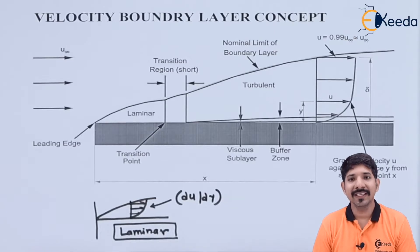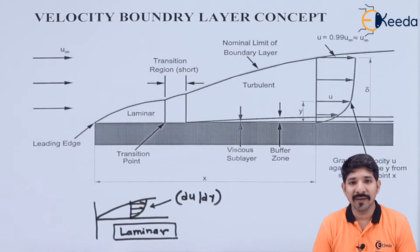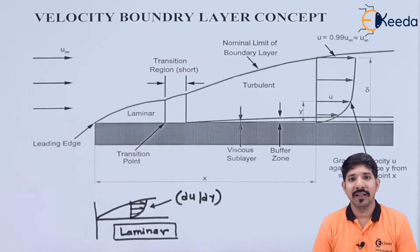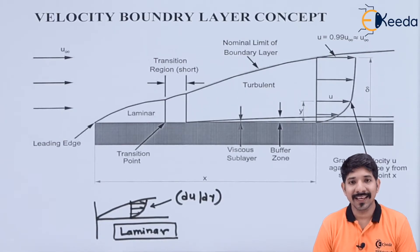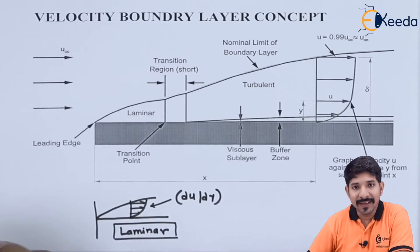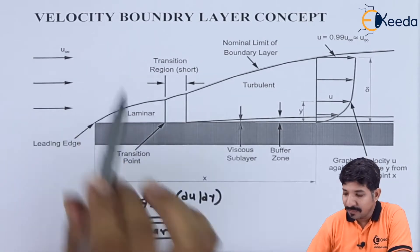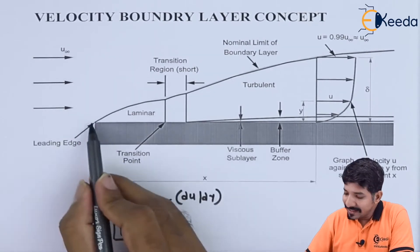We have seen convection and what is the role of fluid dynamics in its convection. Now we need to understand one more concept for the analysis. The concept name is velocity boundary layer. Let us look at the velocity boundary layer.